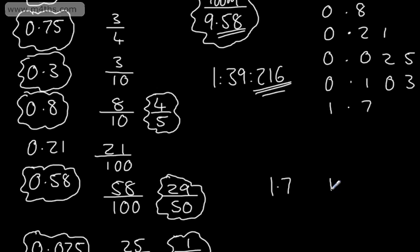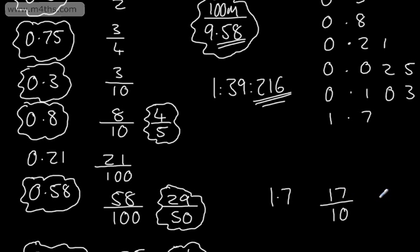Alternatively, we could just write this as 17 tenths. This is a top-heavy fraction, or if you like, a vulgar fraction, and we could, of course, write this as a mixed number, as one whole one, and then we would have now seven tenths. So an alternative way of looking at this now is just to consider 1 plus 0.7, and writing this as seven tenths.